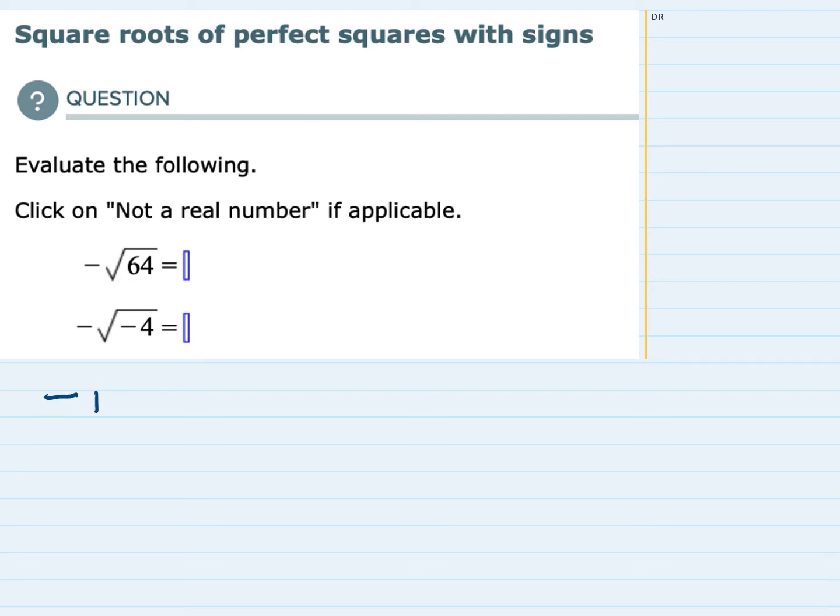Taking the first one, this is negative square root of 64. So what this means is that I'm only taking the square root of 64 and then I have a negative outside of that.